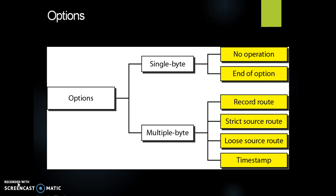Single byte options contain no operation and end of option. No operation option is a single byte option used as a filler between options. End of option is also a single byte option used for padding at the end of the option field. Multibyte options contain record route, strict source route, loose source route, and timestamp.